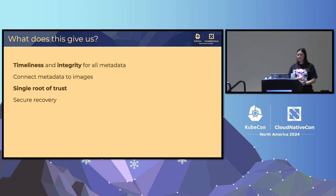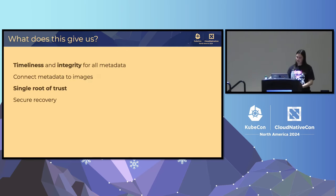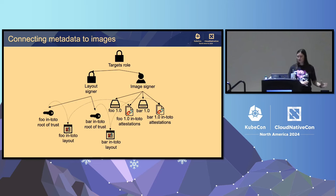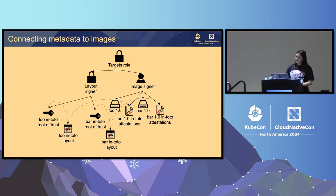What's cool about this is that you get TUF's properties of timeliness and integrity for all the metadata — the in-toto metadata and the images themselves. You can connect the metadata to the images because you're distributing it all in one system. Most importantly, you have a single root of trust: even if in-toto defines its own root of trust, you can put that underneath your existing TUF root of trust. This simplifies what you need to securely distribute down to one small set of keys, and you also get secure recovery — anything delegating to something else can replace the key for that role if any key is compromised.